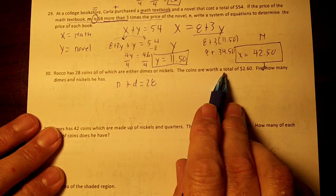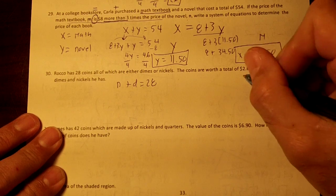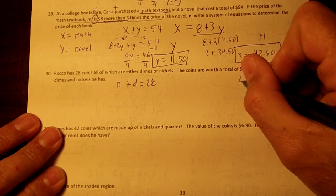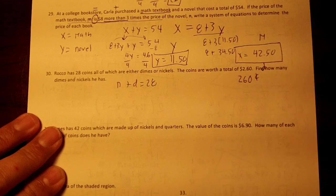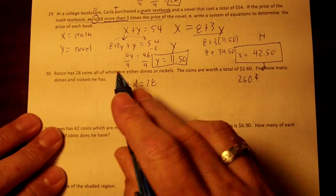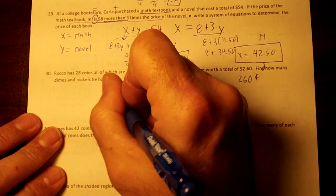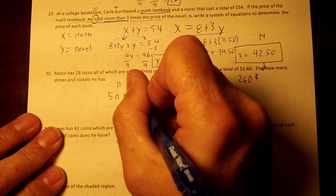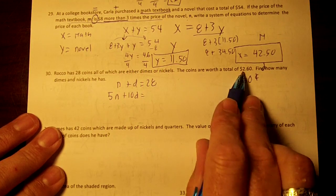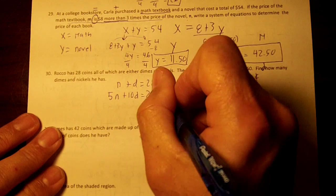Now then, I like using pennies, so we're going to change the $2.60 to 260¢. A nickel is worth 5 pennies, so I'm going to write 5N. A dime is worth 10 pennies, and $2.60 is 260 pennies.